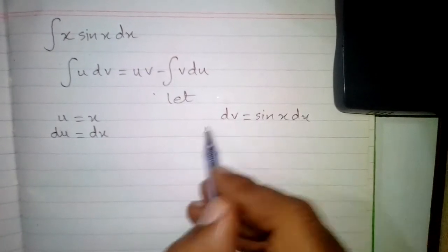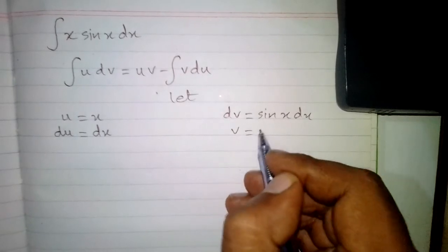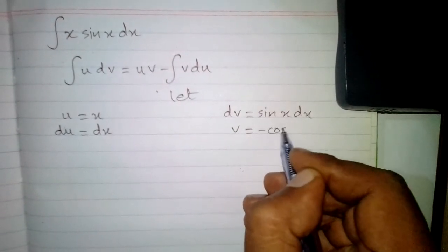And here we have to integrate this expression. So the integral of dv is v, and the integral of sin x is minus cos x.